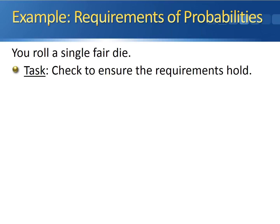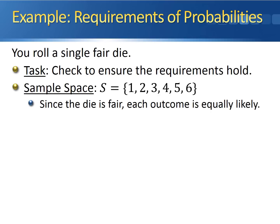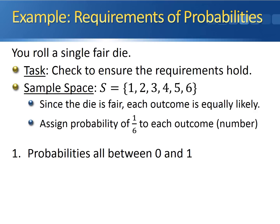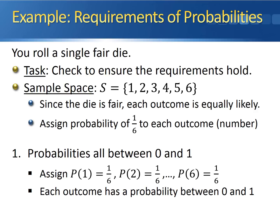Let's check that these requirements hold for our example of rolling a single fair die. The sample space consists of the integers from 1 through 6. Since this die is fair, each outcome is equally likely — no number is more likely to come up than any other. As a result, we assign a probability of 1/6 to each outcome. To check the first requirement, each number from 1 through 6 is assigned a probability of 1/6, which lies between 0 and 1. So the first requirement holds.